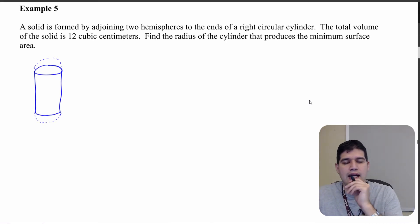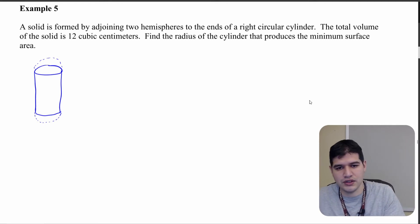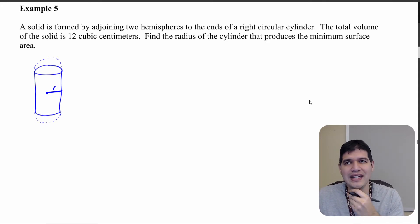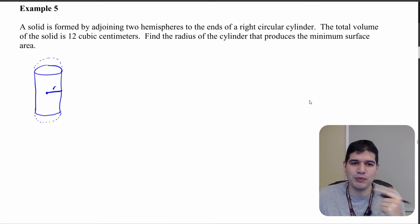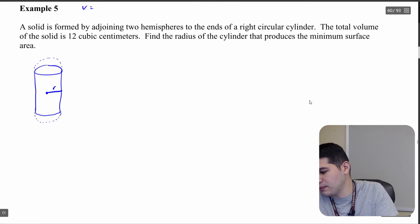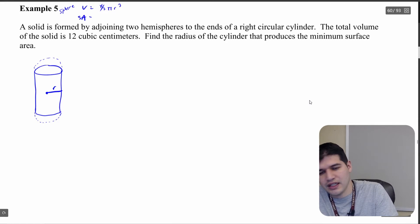So we have a cylinder and then at the top and the bottom we have these half balls. We want to figure out what radius is going to minimize the surface area. Let's think of a sphere first. The volume of a sphere is (4/3)πr³ and the surface area of a sphere is 4πr².